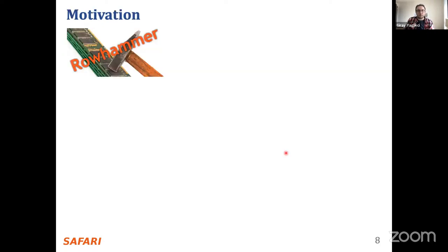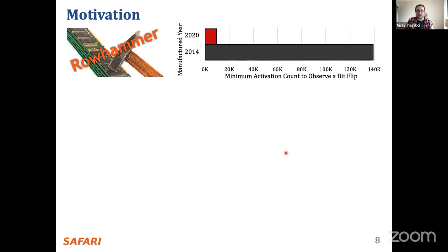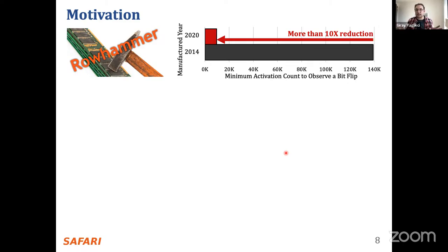Row hammer is a DRAM reliability and security problem. DRAM chips are significantly more vulnerable to row hammer such that the minimum number of activations needed in a row has decreased by more than an order of magnitude in less than a decade. With this aggressive scaling, we expect very low row hammer thresholds in the near future. So far, we have observed around 4.8 to 5K activations in a 64-millisecond time window, while within that window it's actually possible to do almost 1.5 million row activations.